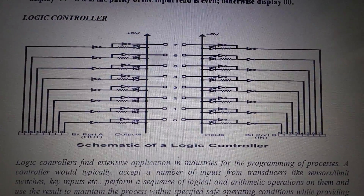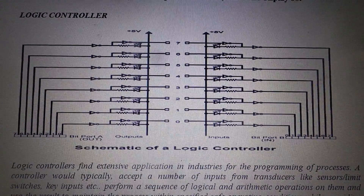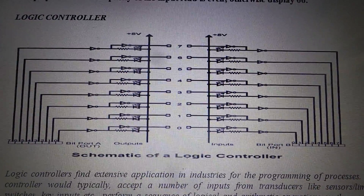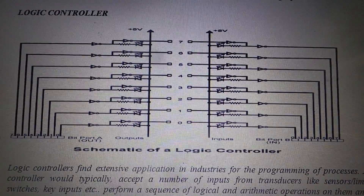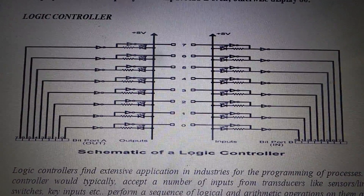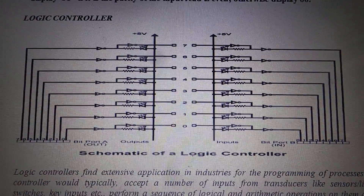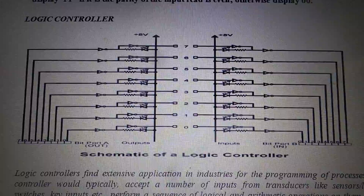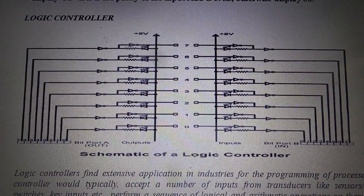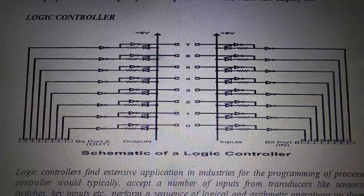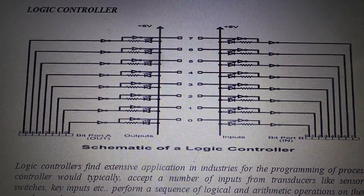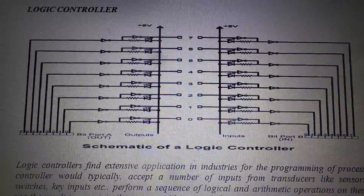The next experiment that we will be executing is how to implement a BCD up-down counter on a logic controller. As you can see in the video, a logic controller consists of 8-bit input ports and 8-bit output ports, out of which we have selected port B as the input and port A as the output, which means that we will be using a control word of 82H. Whenever you see the control word is 82H in the program, it means that port B is the input and port A is the output.